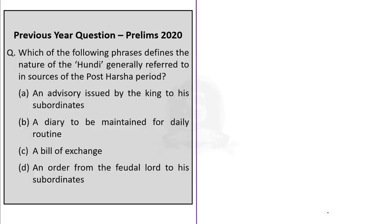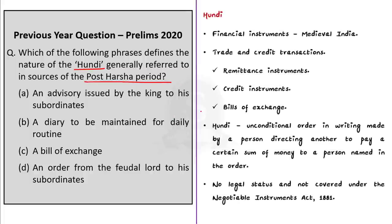The second question: Which of the following phrases defines the nature of the hundi generally referred to in sources of the post-Arsha period? Option A: an advisory issued by the king to his subordinates. Option B: a diary to be maintained for daily routine. Option C: a bill of exchange. Option D: an order from the feudal lord to his subordinates. The answer is Option C — bill of exchange.